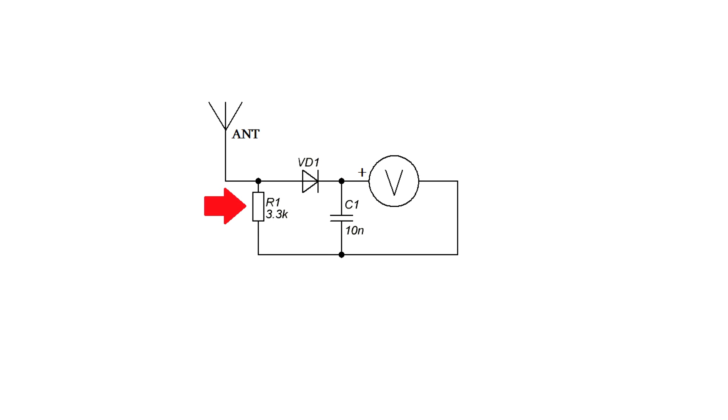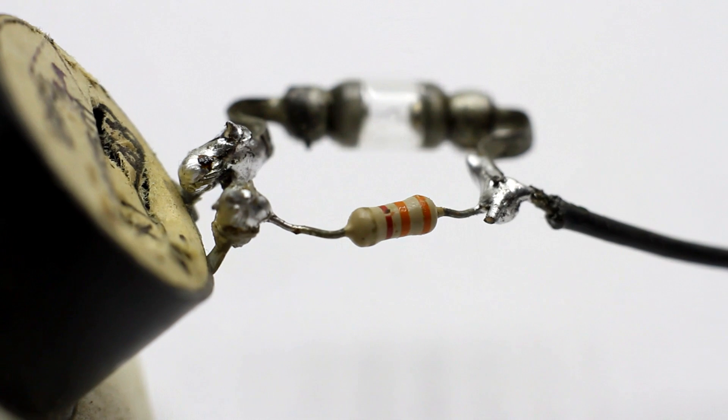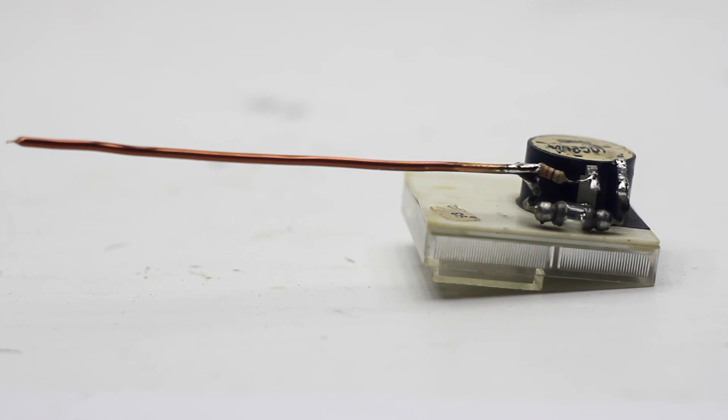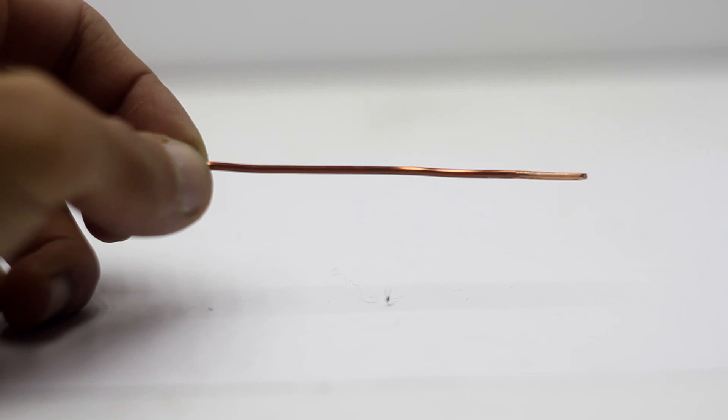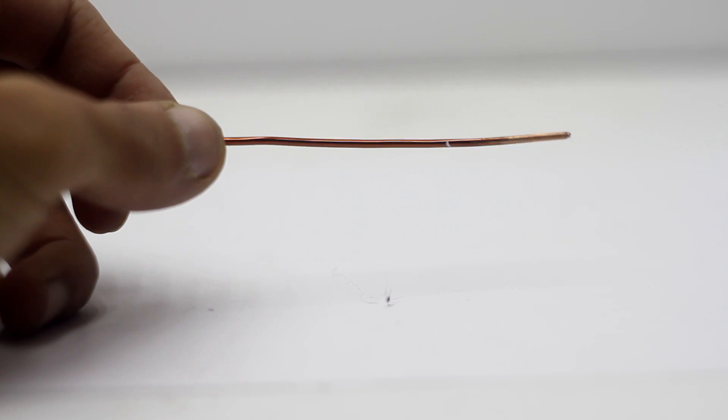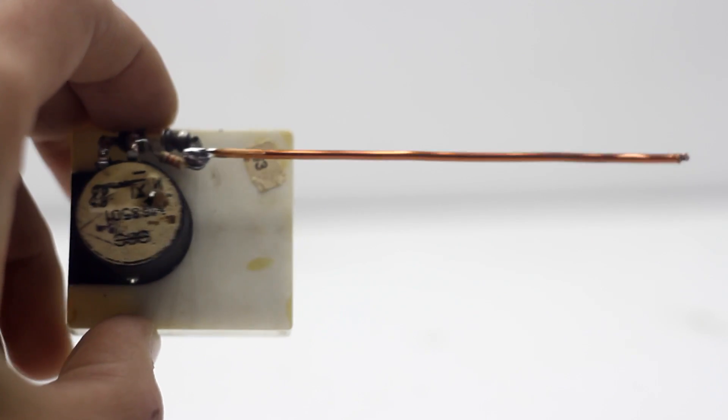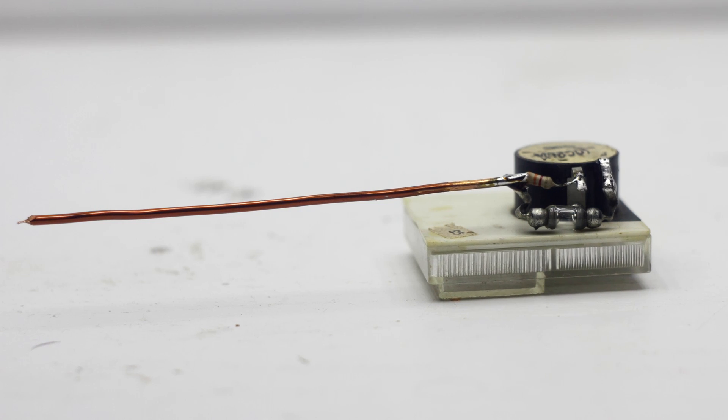In addition, we need one resistor, which may have a resistance of 1.5 to 4.7 kOhms. I took 3.3 kOhms. Antenna is a piece of copper wire, length of 5 to 10 cm. Diameter is not particularly important, but for durability I advise you to take a wire with a diameter above 1 mm.